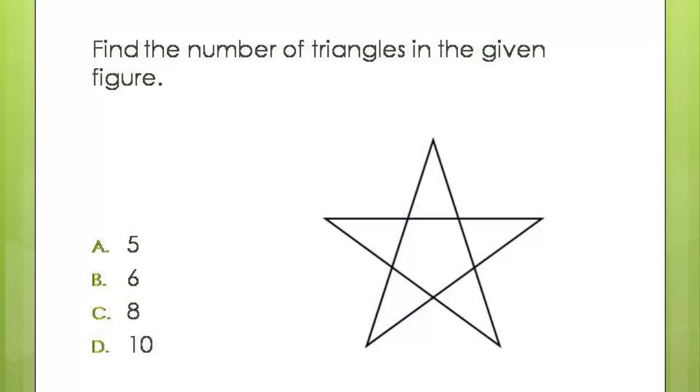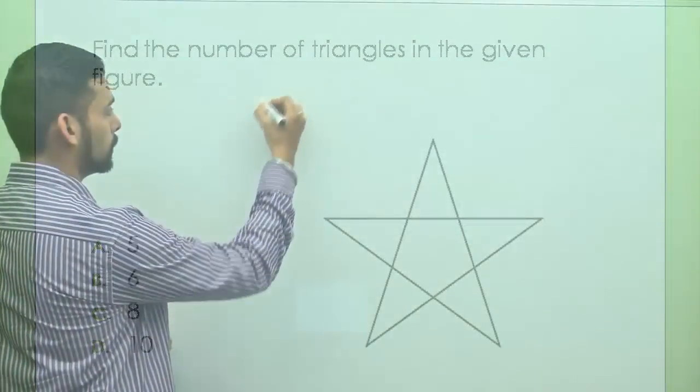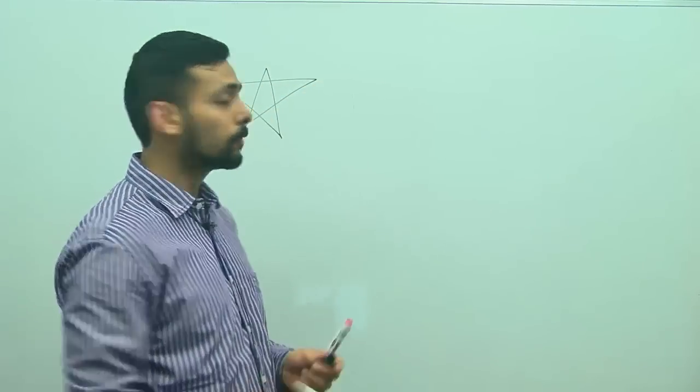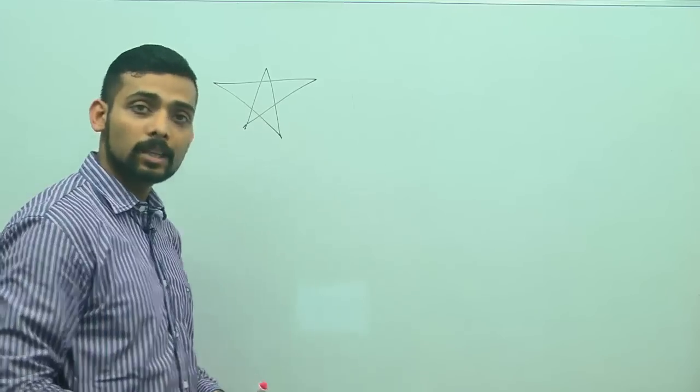If you take a look at your screen, you have a question which says find the number of triangles in the given figure and we have the shape of a star, so let me just put that over here. We have a star and we have to identify the number of triangles present in this star.